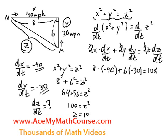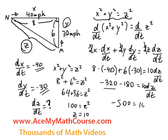So here we have 10 times dz/dt. Now 8 times negative 40 is negative 320. 6 times negative 30 is negative 180. Negative 320 minus 180 is negative 500, and that's equal to 10 times dz/dt. So now we can divide both sides by 10 to solve for dz/dt, and we're just going to get negative 50.